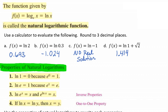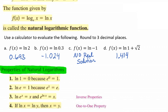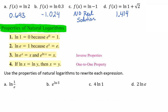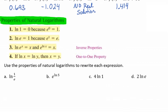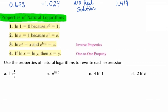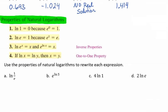Property 4 is the one-to-one property: if the natural log of x equals the natural log of y, then x simply equals y. We're now going to go through a couple of examples where we use these properties to rewrite each expression.